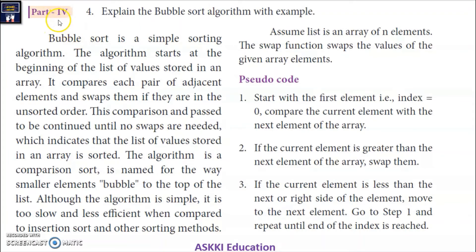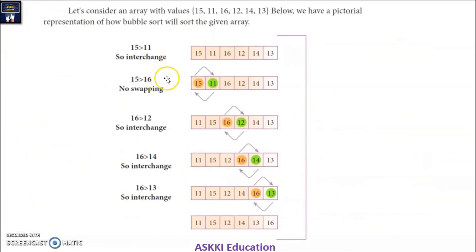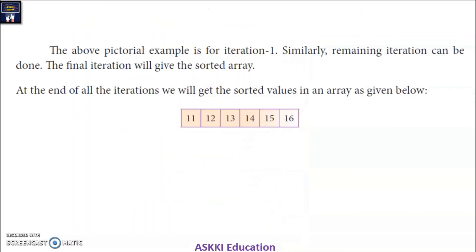In our textbook, the fourth question is: explain the bubble sort algorithm with an example. In the algorithm explanation, it is too slow and less efficient when compared to insertion sort and other sorting methods. The first iteration is explained, and you can add 5 more iterations. That is not given in your textbook. Finally, at the end of all iterations, we will have sorted values.